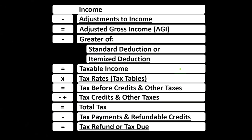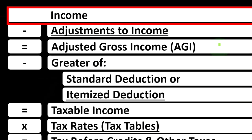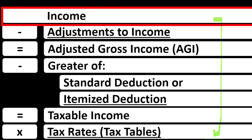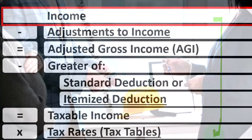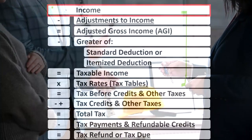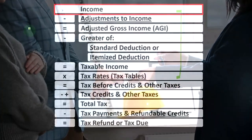Looking at the income tax formula, we're focused on line one income. Remember, the first half of the income tax formula is in essence an income statement, just an outline of other forms and schedules flowing into these line items. One of those is the Schedule E — in essence an income statement in and of itself — with rental income minus rental expenses, and the net rental income flowing into line one income of Form 1040.